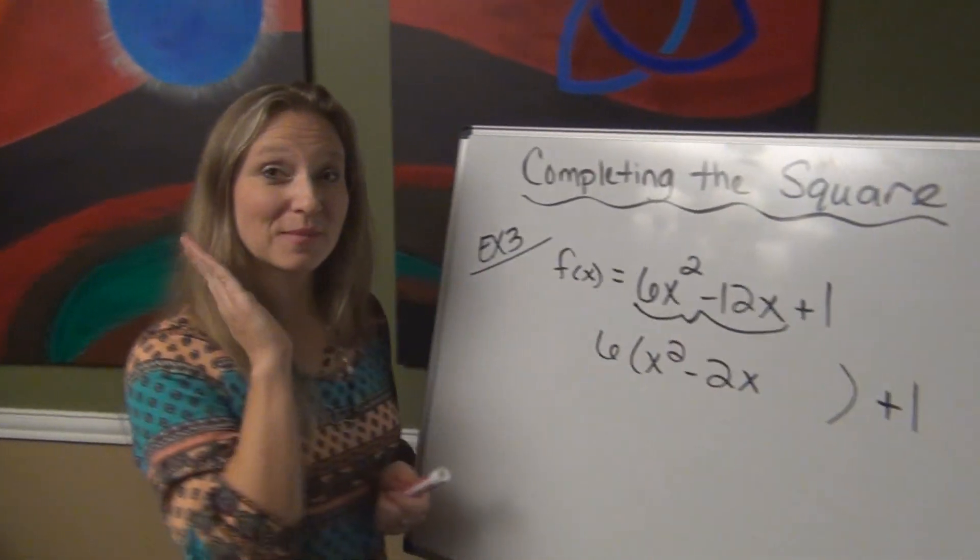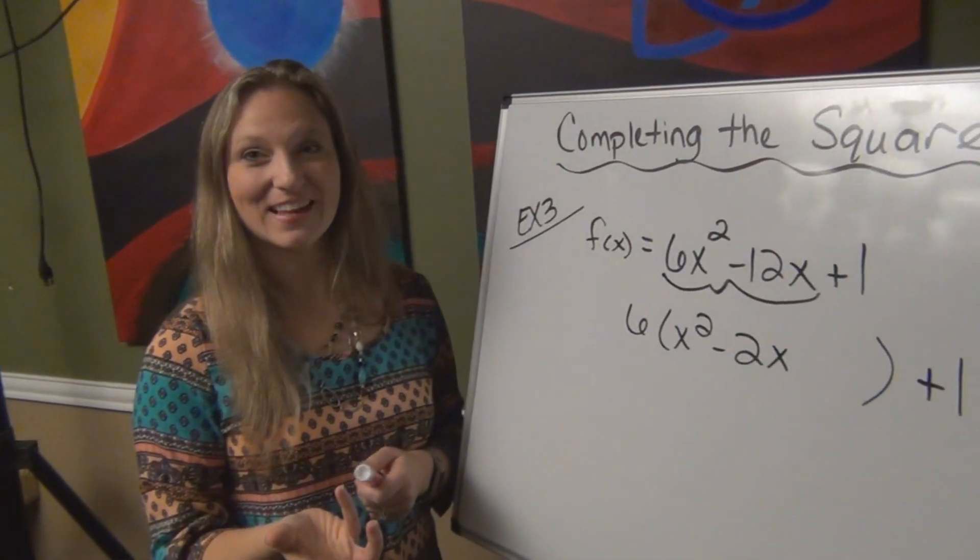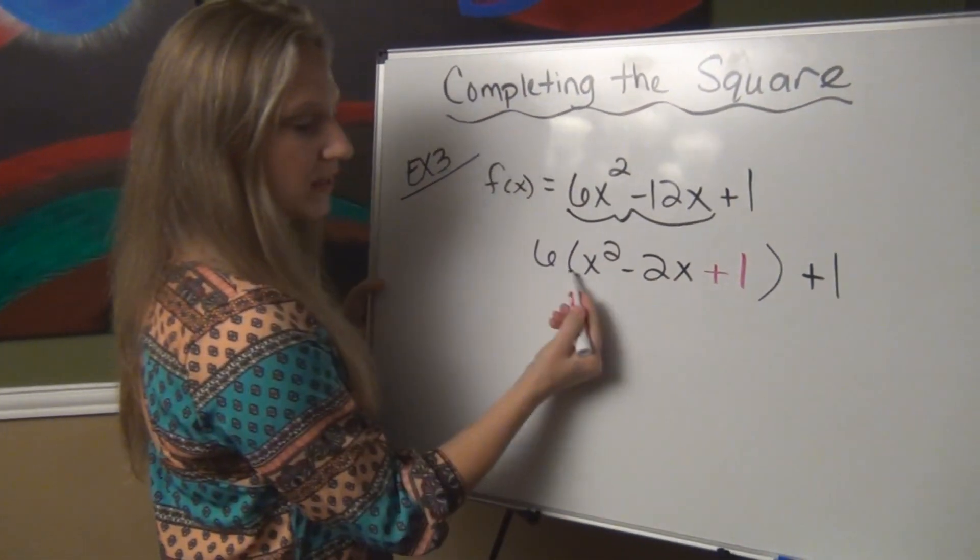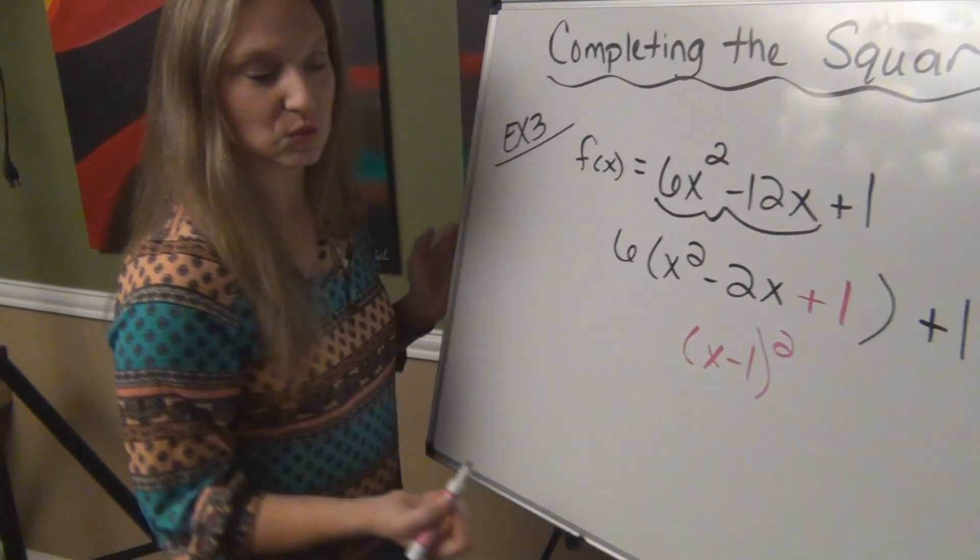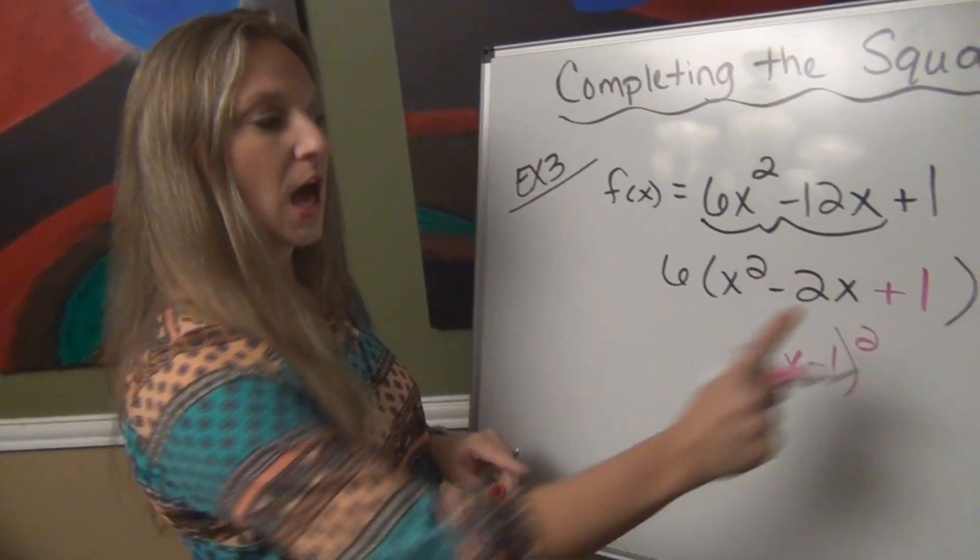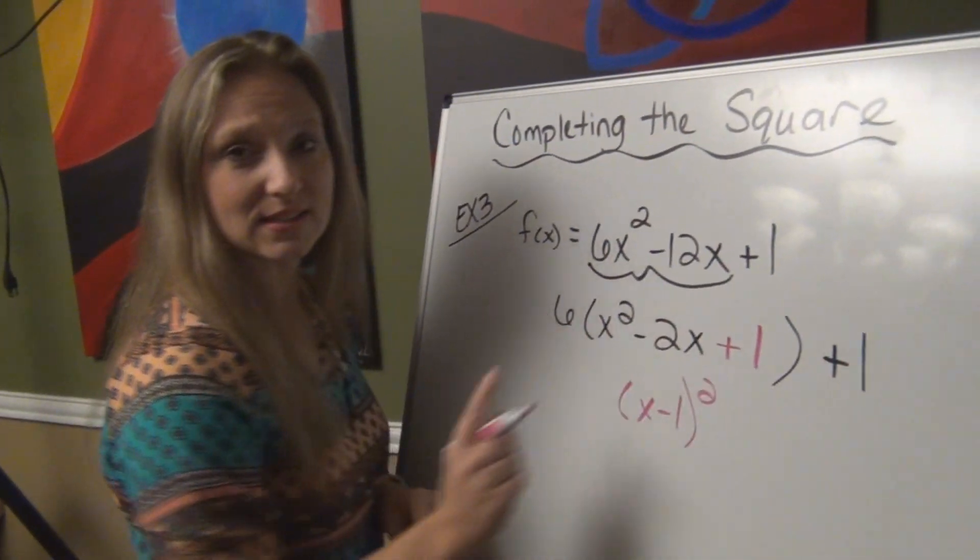So I'm going to take that negative 2 and I'm going to half it, it's negative 1, square it and that's positive 1. So what I want to do is add 1 to make this into the perfect square x minus 1 squared. Now here's the one thing that's different. I added 1 and so previously to keep it balanced I would be minusing 1.